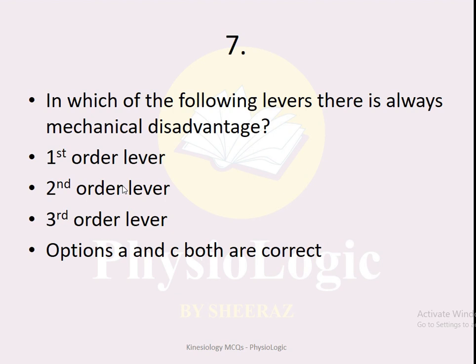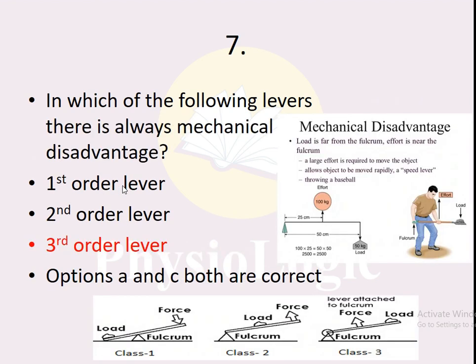MCQ number seven: in which of the following levers is there always mechanical disadvantage — first-order, second-order, third-order, or both A and C? The correct option is the third-order lever. To understand this, you need to know mechanical advantage: if less effort is required to do a task, you have mechanical advantage. For example, if you want to lift a 10 kg dumbbell and you only need 5 kg of force with an instrument, that is mechanical advantage.